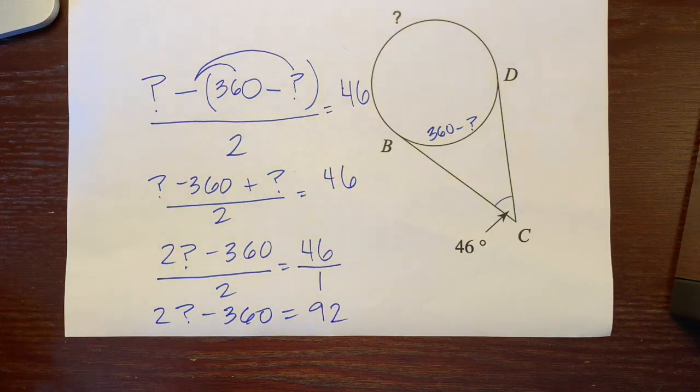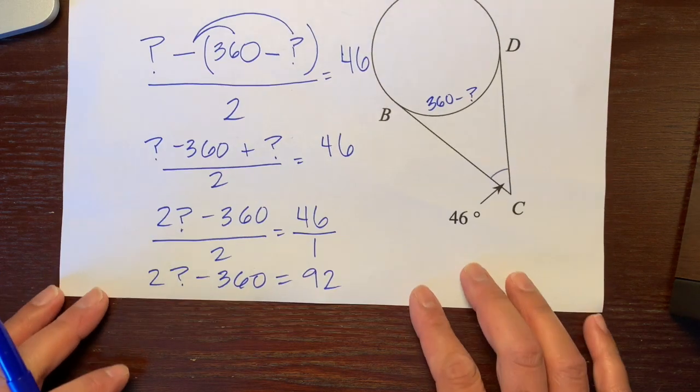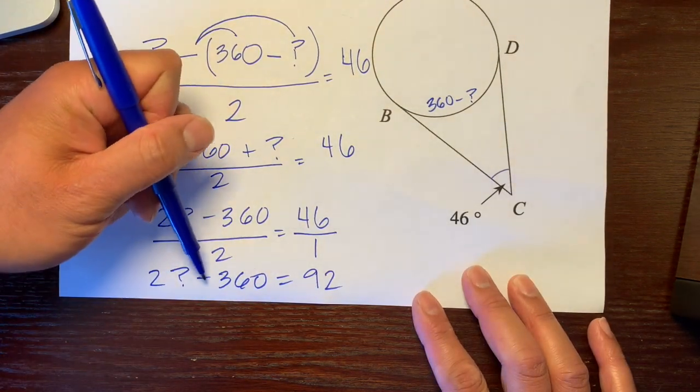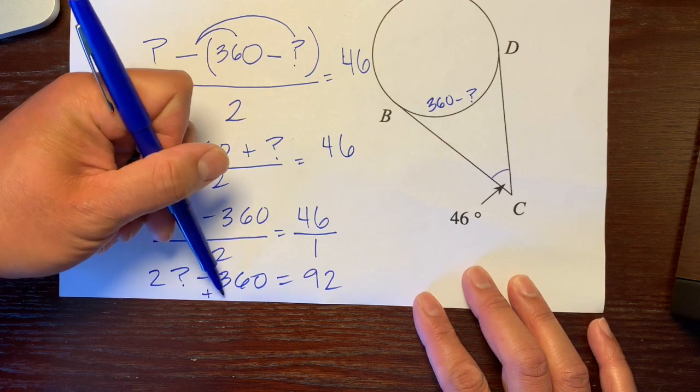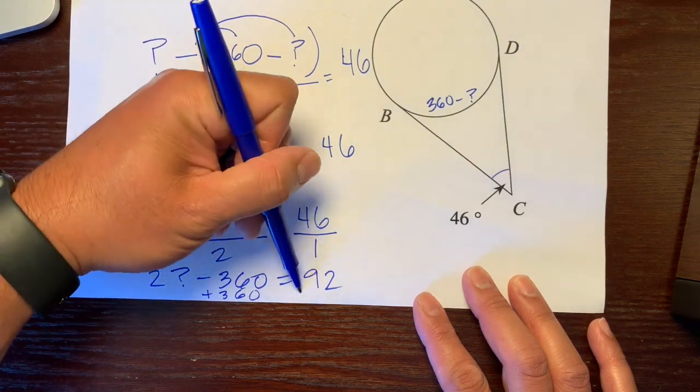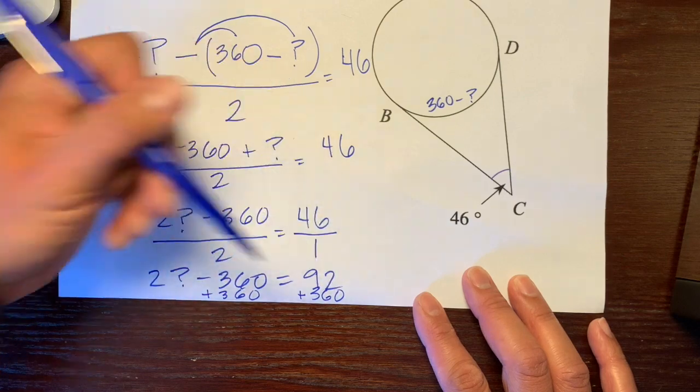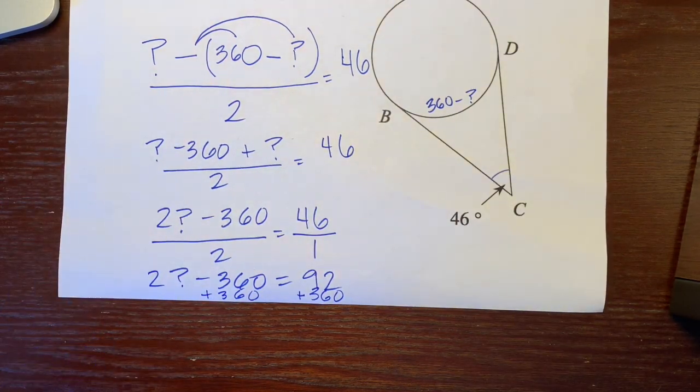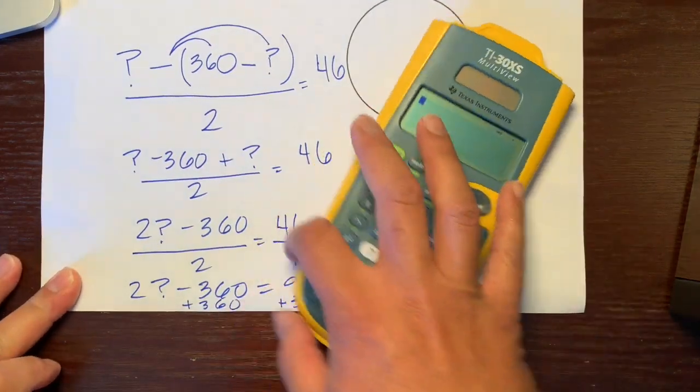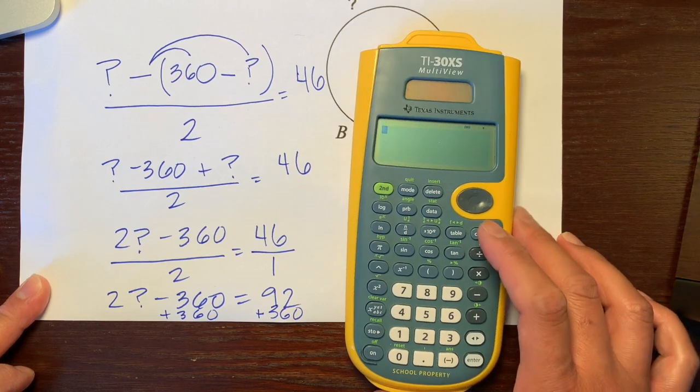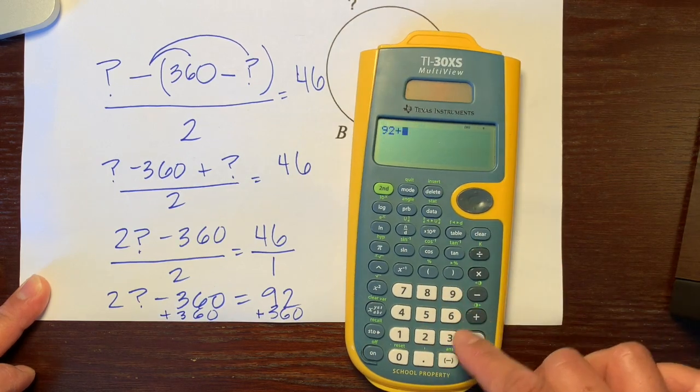Let's get this 360 to the other side. Opposite of subtraction is addition, so we'll add 360 and add 360. Let's get our calculator and add 92 plus 360, which is 452.